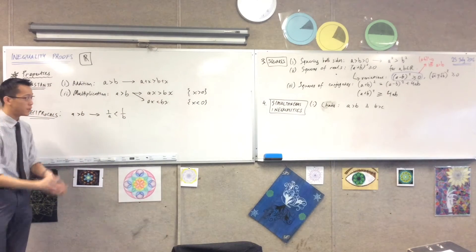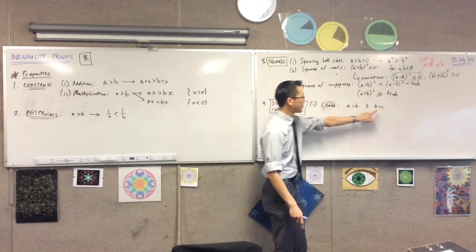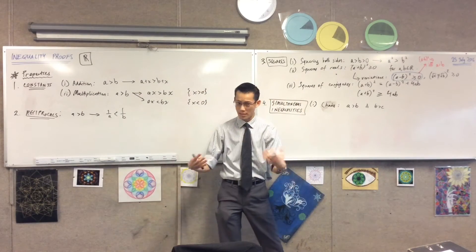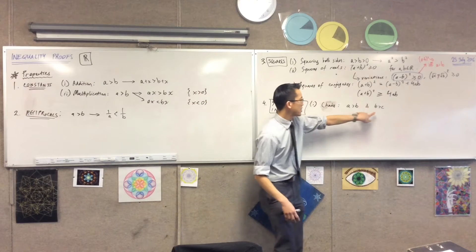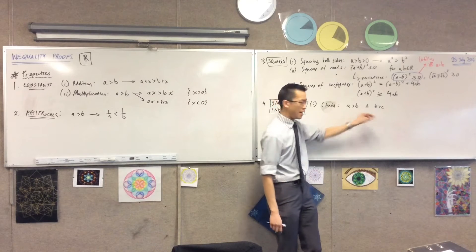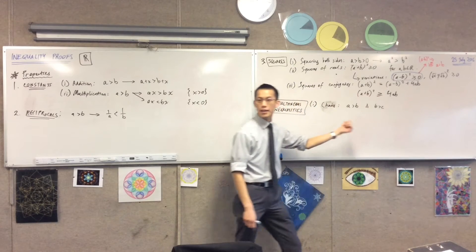If you've got two inequalities, right? So again, simultaneous inequalities, these exist in the same universe. But there's some common feature between them, right? Then you can string them together in a chain.